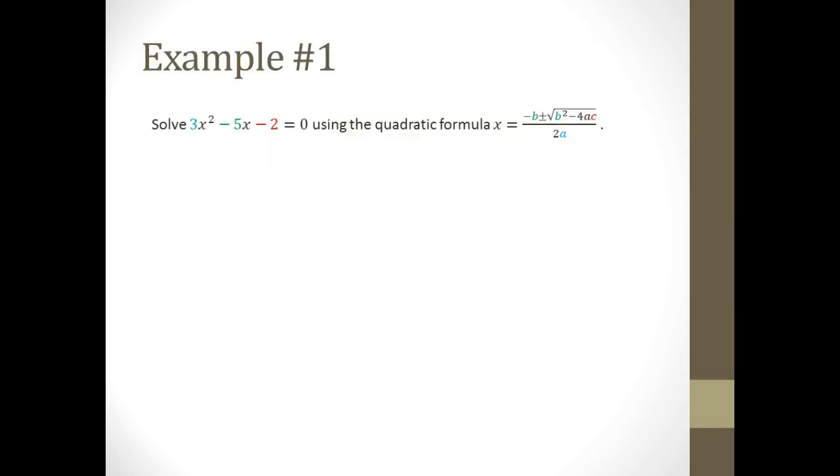So let's look at an example. Here we have a is 3, b is negative 5, and c is negative 2. Let's see what we get when we substitute those values into the formula. This is what I would write down on my paper to document my work, and you'll notice that I always put the b value in parentheses.